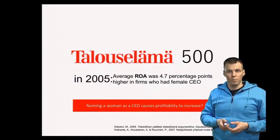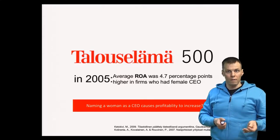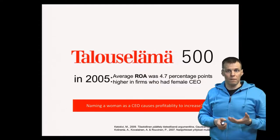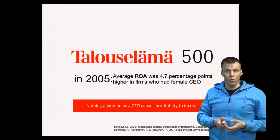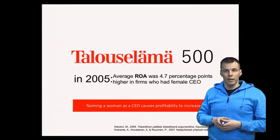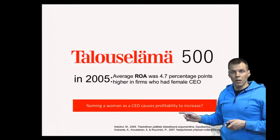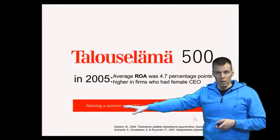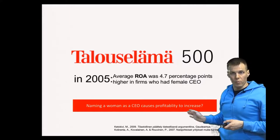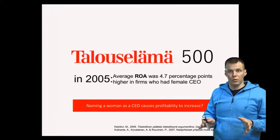We need an example. In 2005, among the largest 500 Finnish companies, there's a finding that women-led companies were 4.7 percentage points more profitable than men-led companies, and we want to make a claim that naming a woman as a CEO causes the profitability to increase. So our theoretical concept here is CEO gender, and the second theoretical concept is profitability or performance. Then we have to figure out how exactly we link those two theoretical concepts to the data.